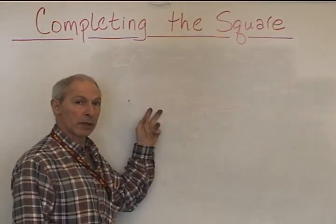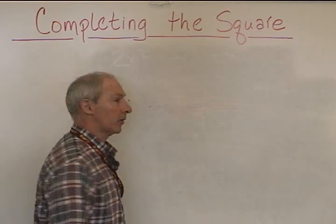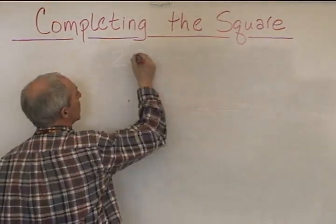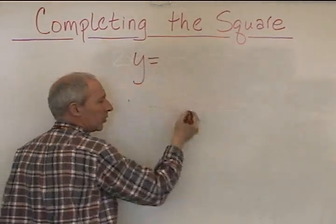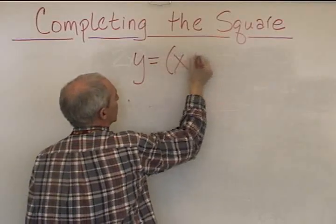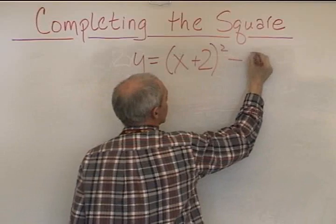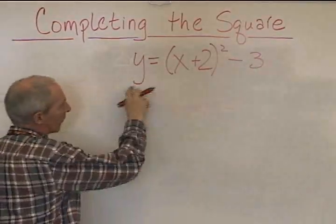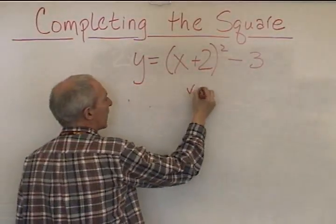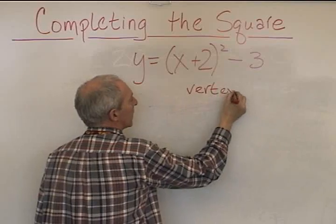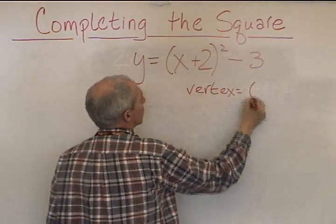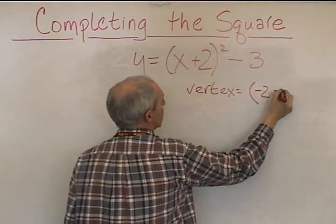Now earlier in the school year, I taught you how to go from vertex form, which can look like this. y is equal to x plus 2 all squared minus 3. This is the vertex form, and the vertex for this parabola is equal to negative 2, negative 3.